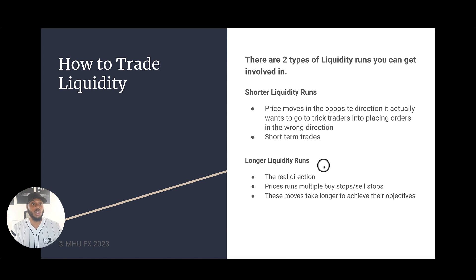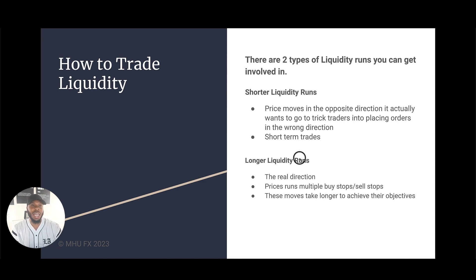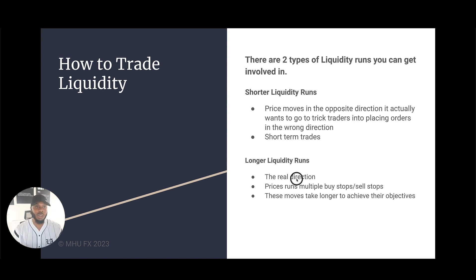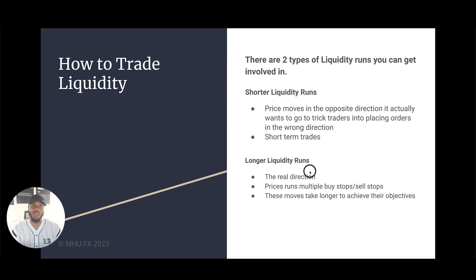So those are the two types of liquidity runs, and with those two types you have to decide how you want to play. With the longer liquidity run, you don't have to hold for multiple buy or sell stops — you can target the nearest one. That turns it into a shorter move, but at least you're trading in the right direction.